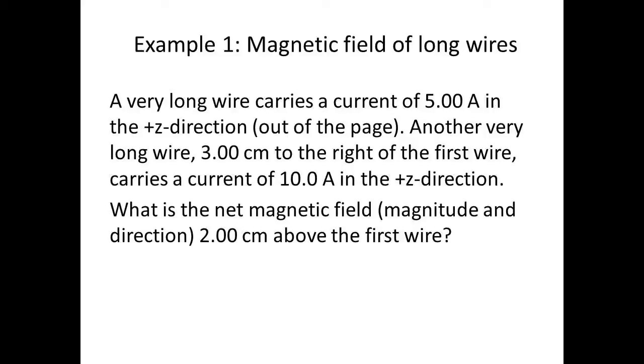This is an example of a magnetic field calculation, more specifically the magnetic field of long wires. A very long wire carries a current of 5 Amperes in the plus Z direction, out of the page.